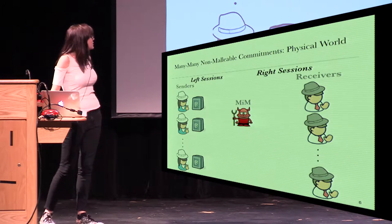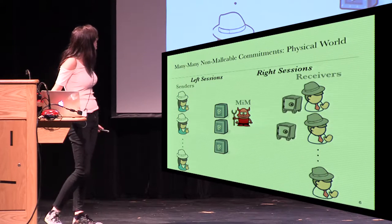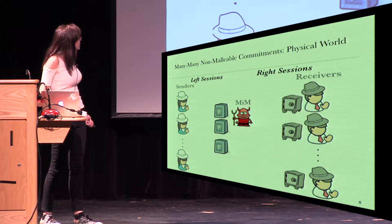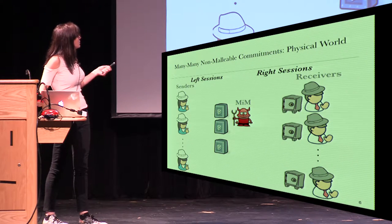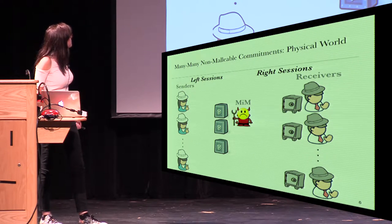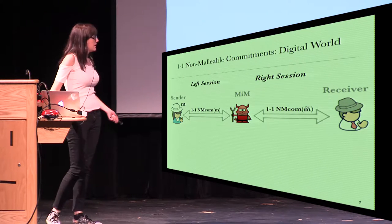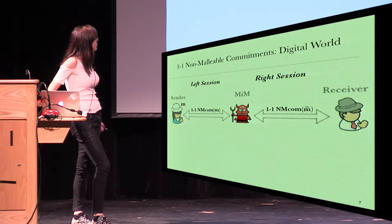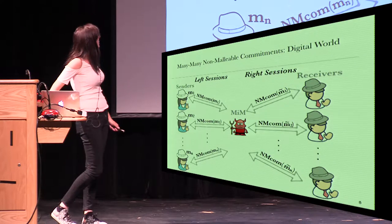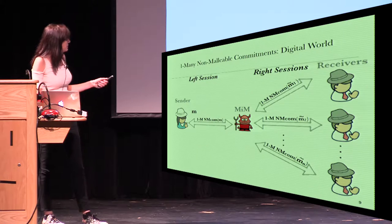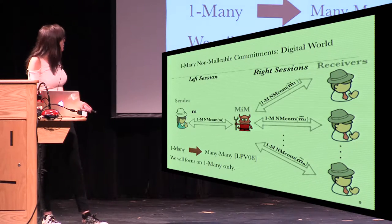We can think about a more general scenario where there are multiple senders and multiple receivers. Also in this case, the man in the middle cannot win the game, because he cannot read what is the message inside the safe. So he can only compute a new message and send a new message. In a digital world scenario, a non-malleable commitment scheme is a protocol. We can consider a 1-1 scenario, or a more general game with multiple senders and multiple receivers, or a 1-many scenario with one sender and multiple receivers. This was shown by Lin et al. that 1-many implies many-many, so in order to study concurrency we can focus on 1-many only.